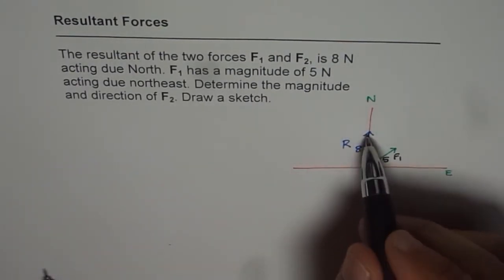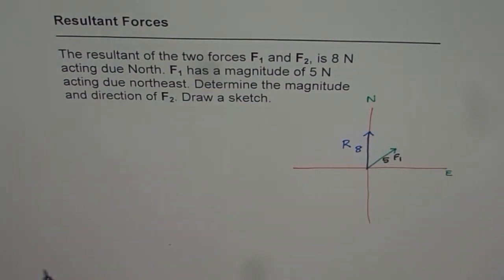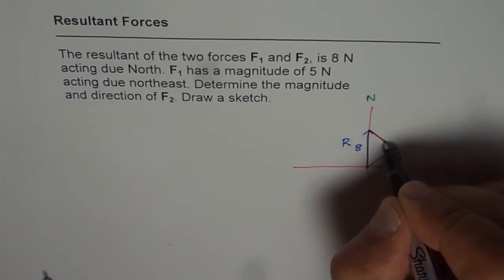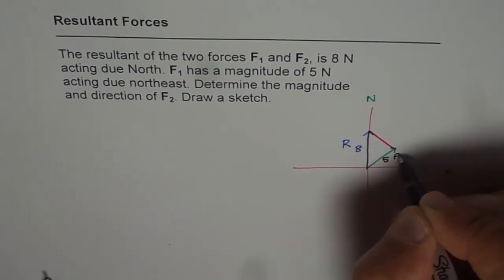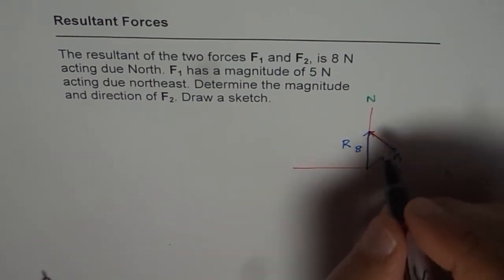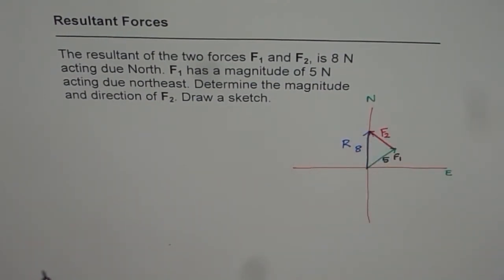Now since R is the resultant, then F2 should be a vector with tail from the end point of F1 and terminating at the resultant. So that is our force F2. So this diagram represents the situation.